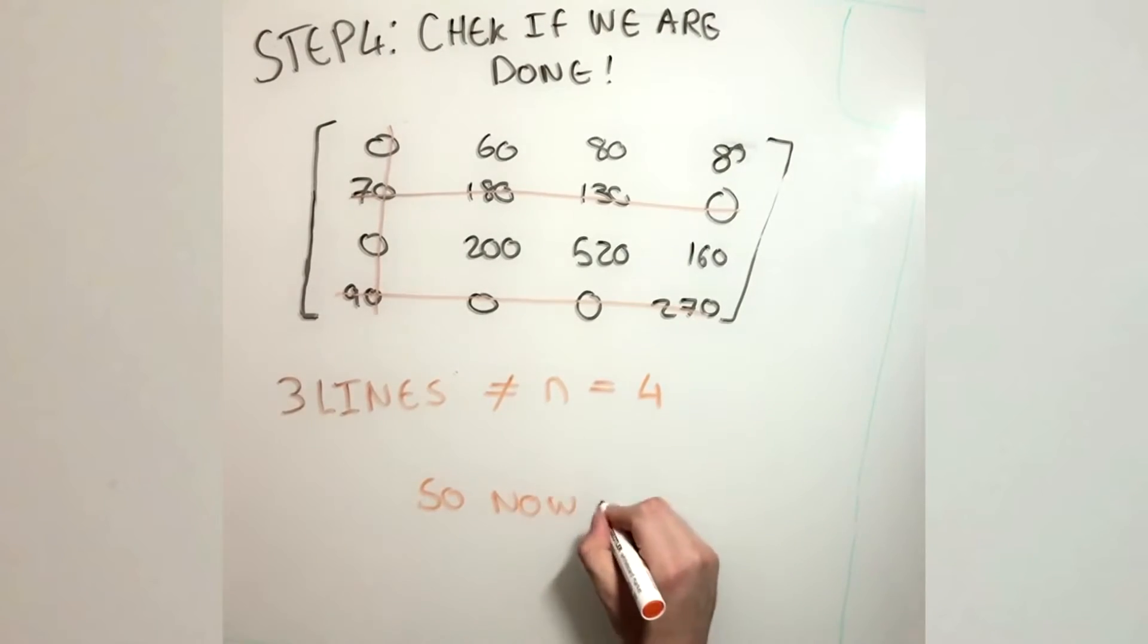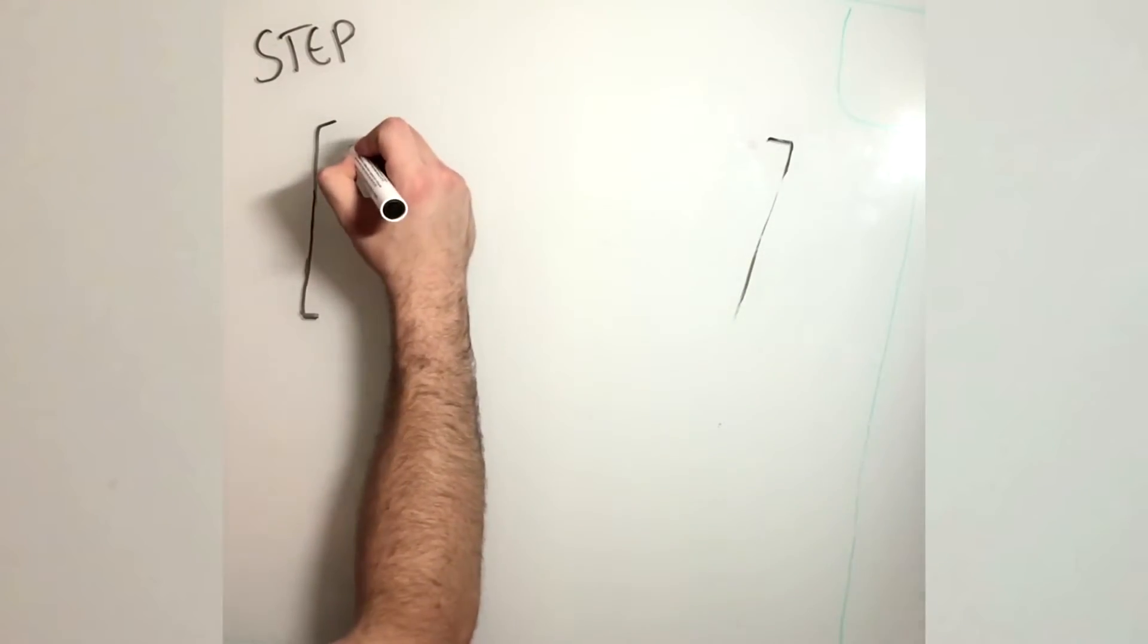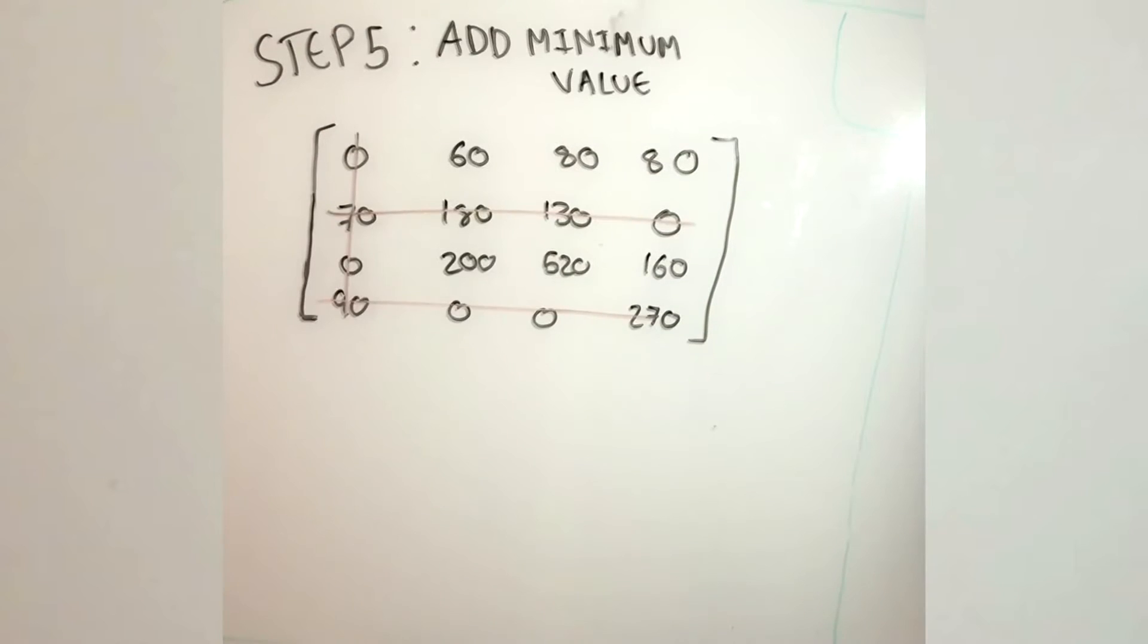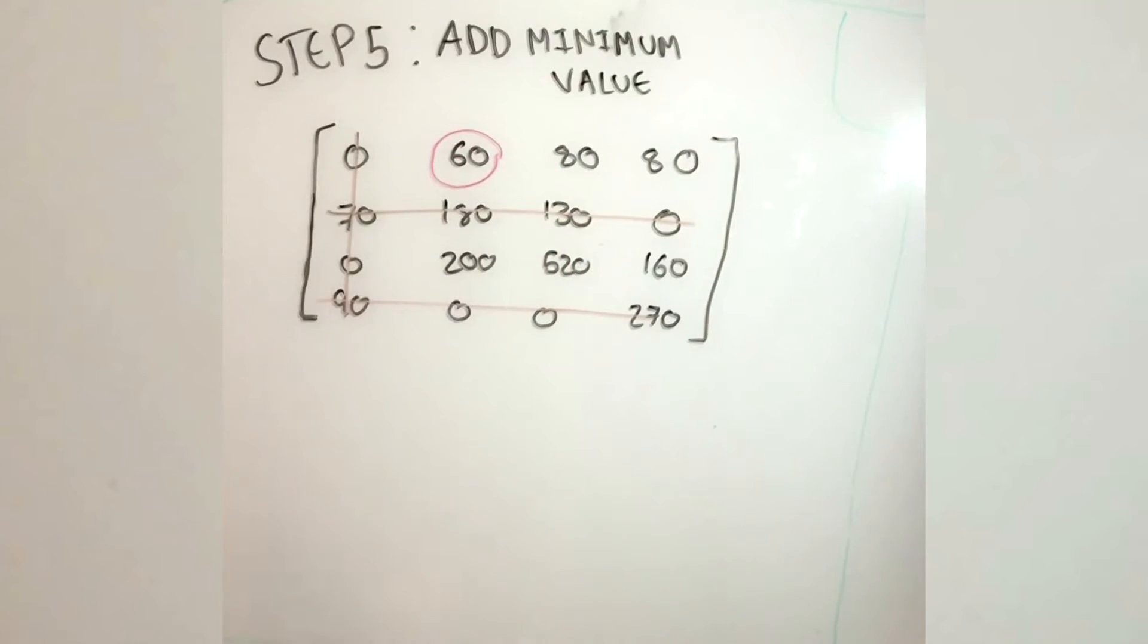So now what? Well, in this case, we have an additional step. The next step is to add the minimum value that goes through the lines. So in our case, the minimum value in this matrix is 60. So we add 60 to all the values to go through the current lines, those three lines we formed in the last step.